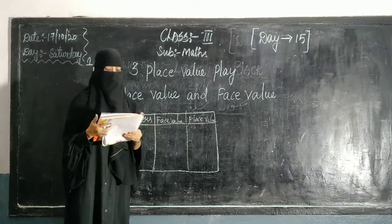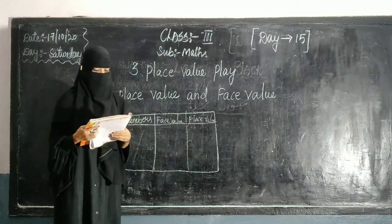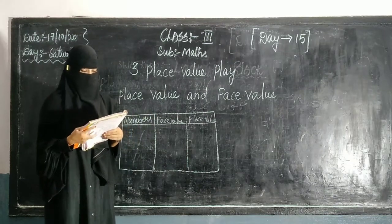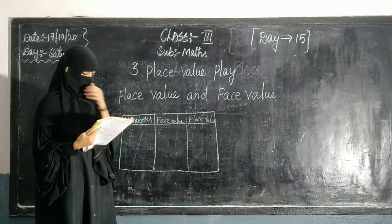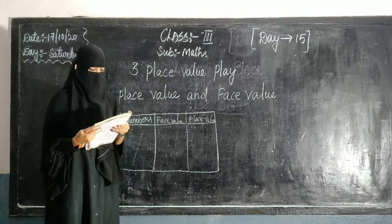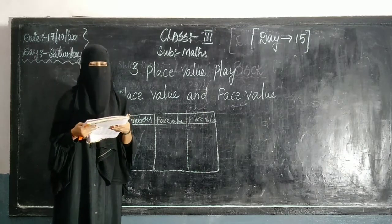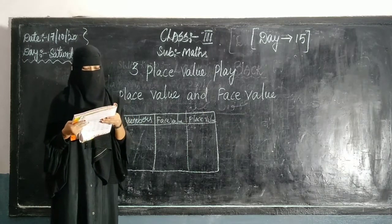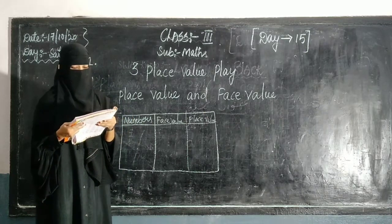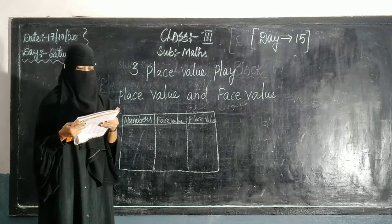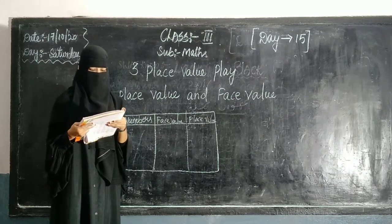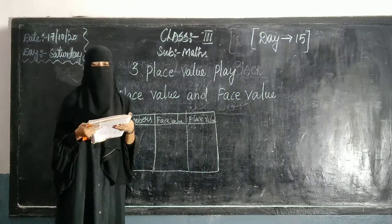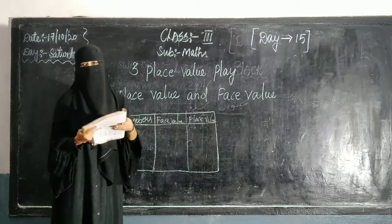These are the learning outcomes: place value, tap out the gap, place value, expanded form, standard form, comparison of numbers, ascending and descending order, and successor and predecessor.